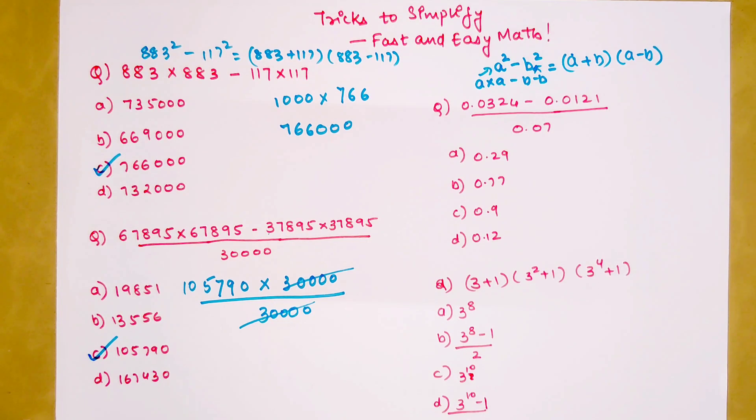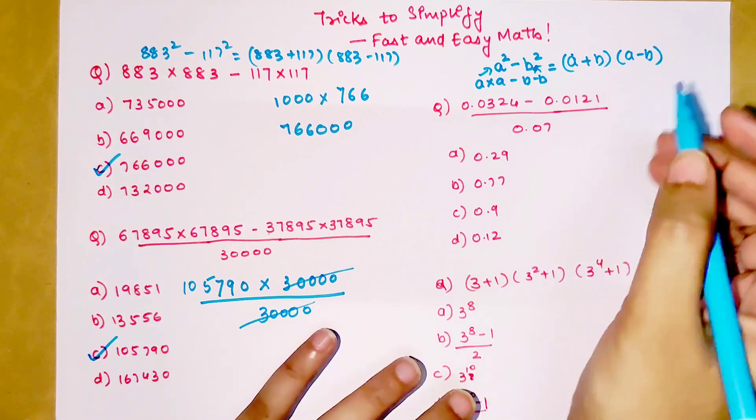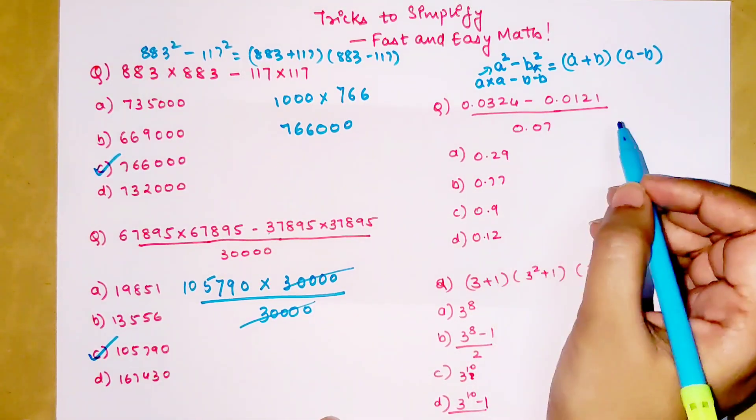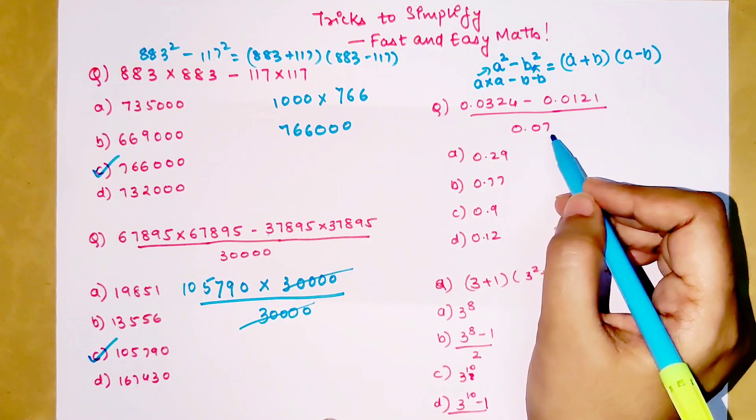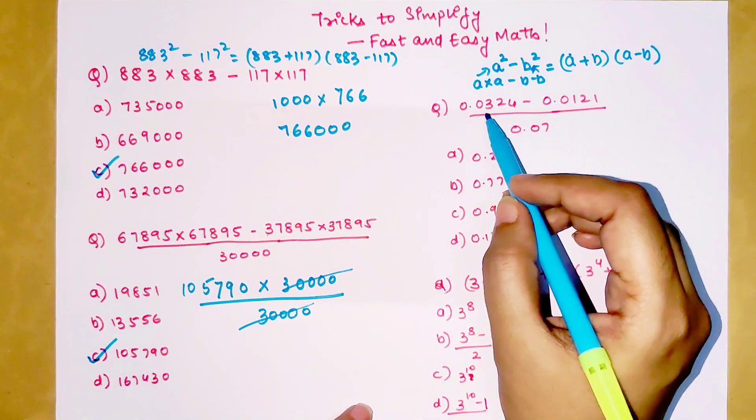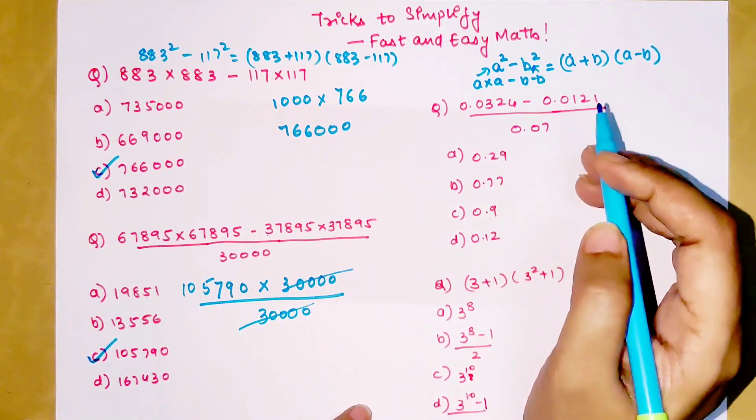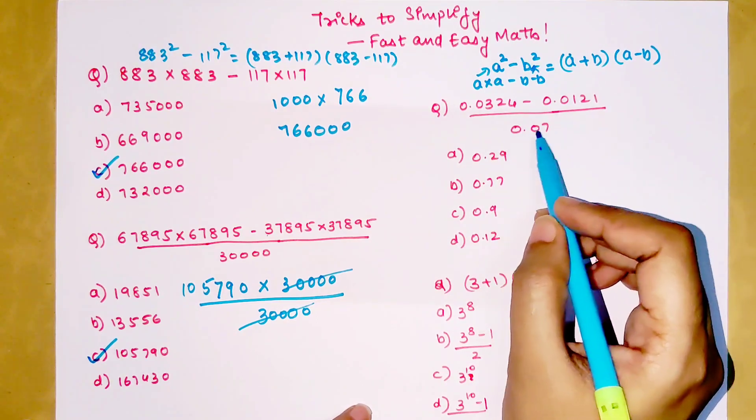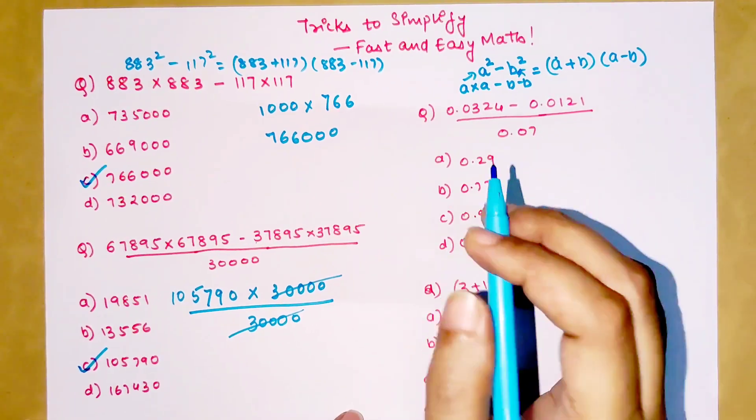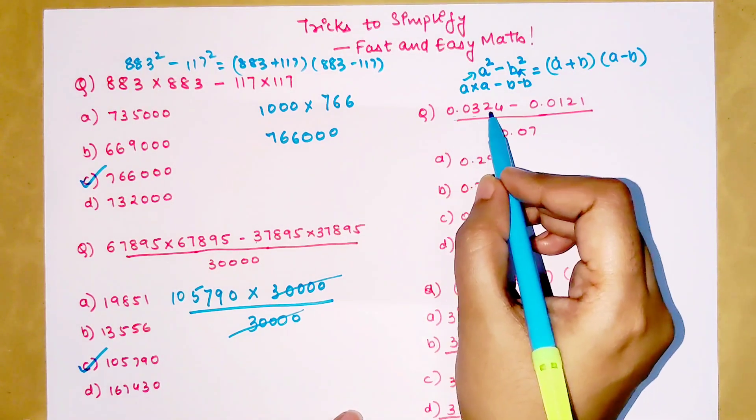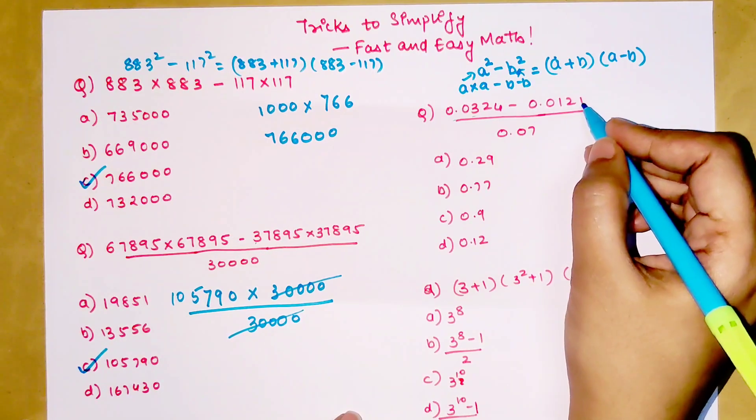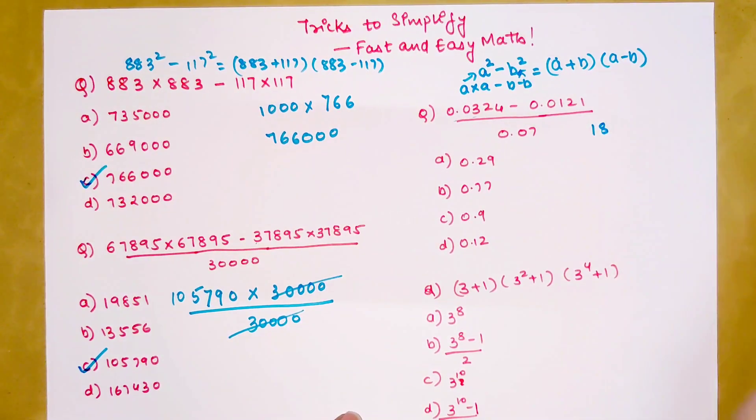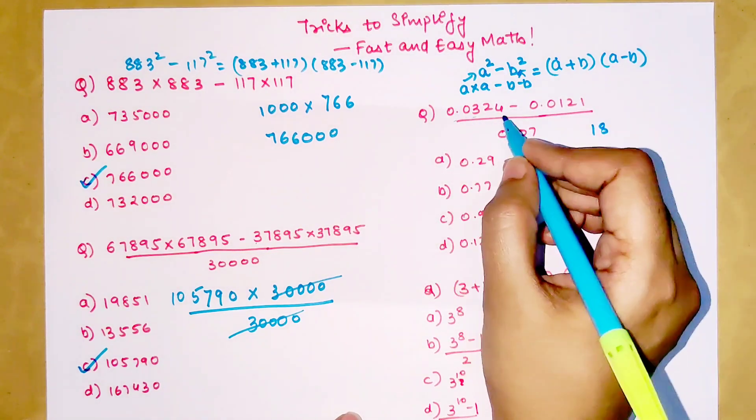Now we are looking at decimals and this is getting divided by 0.07. A lot of you might think, let's do the subtraction, but division also takes a lot of time. If you look closely here, 324 is 18², and 121 is 11².